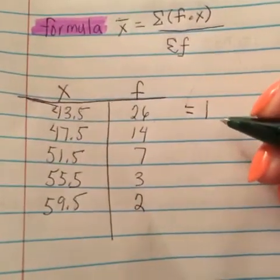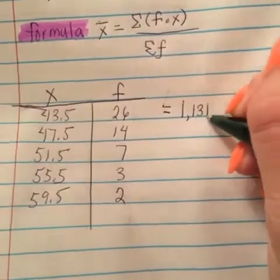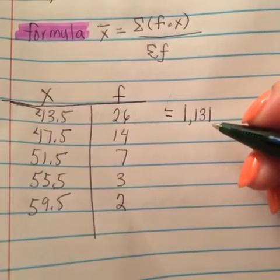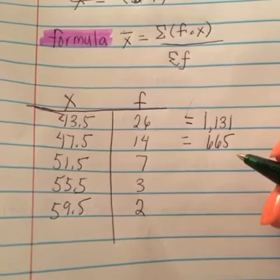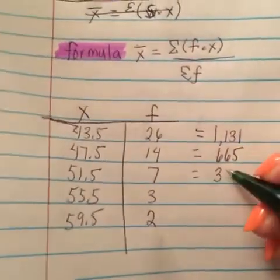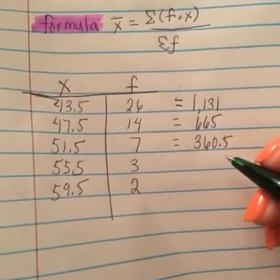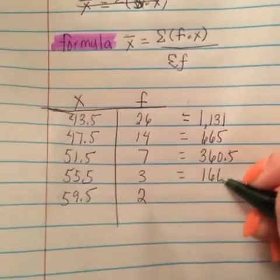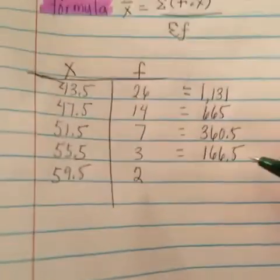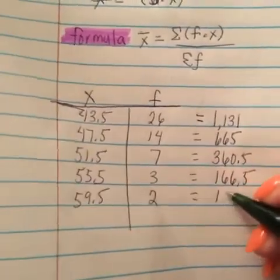For the first one we have 43.5 times 26 which is 1131. The second one is 47.5 times 14 which is 665. The third one is 51.5 times 7 which is 360.5. Then 55.5 times 3 equals 166.5, and for the last one we have 59.5 times 2 which equals 119.